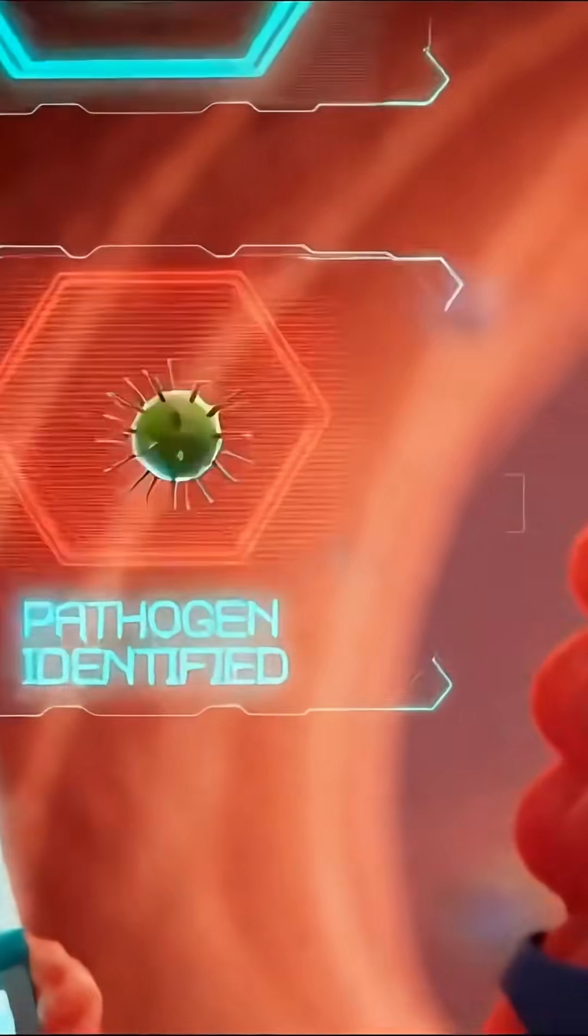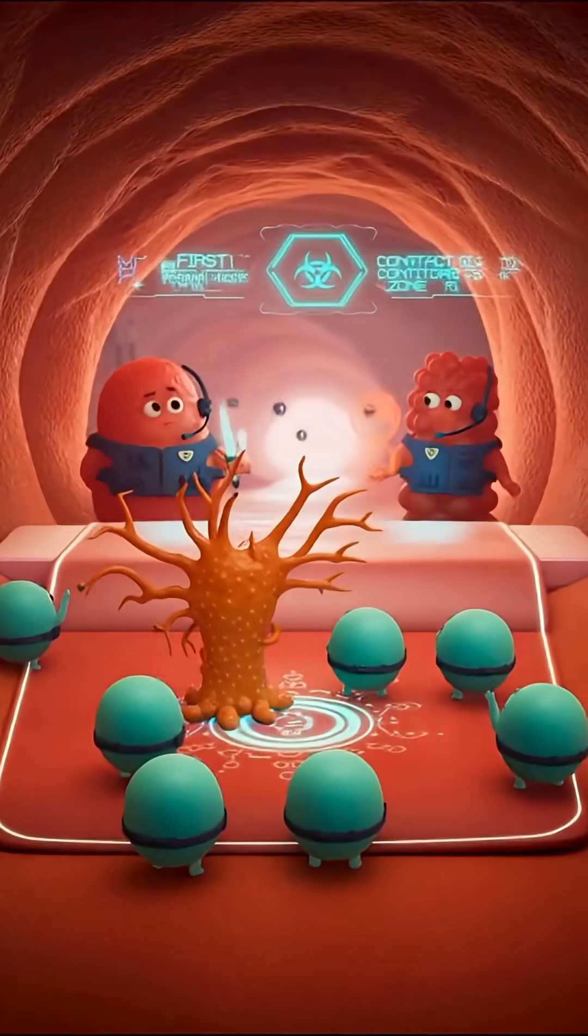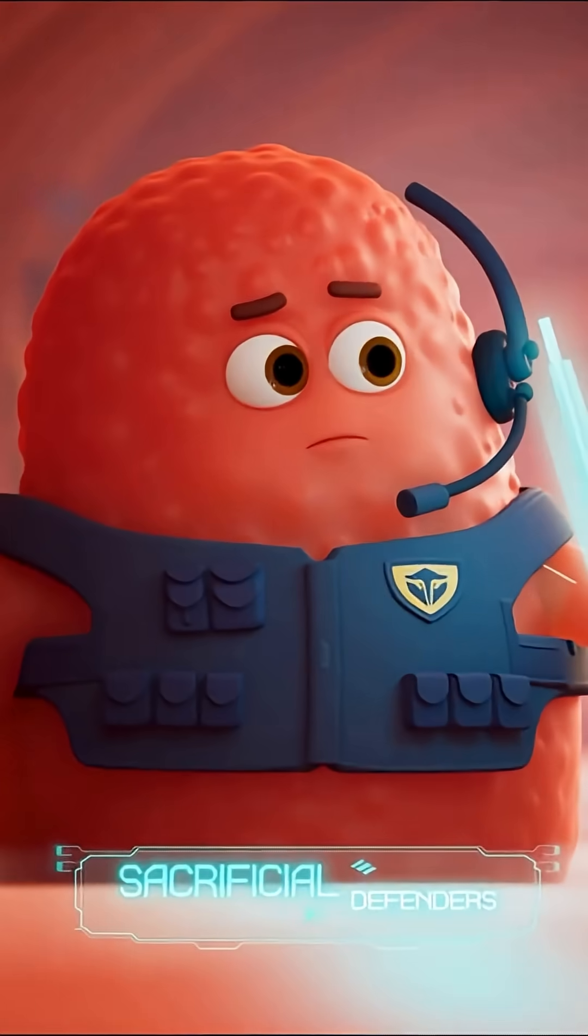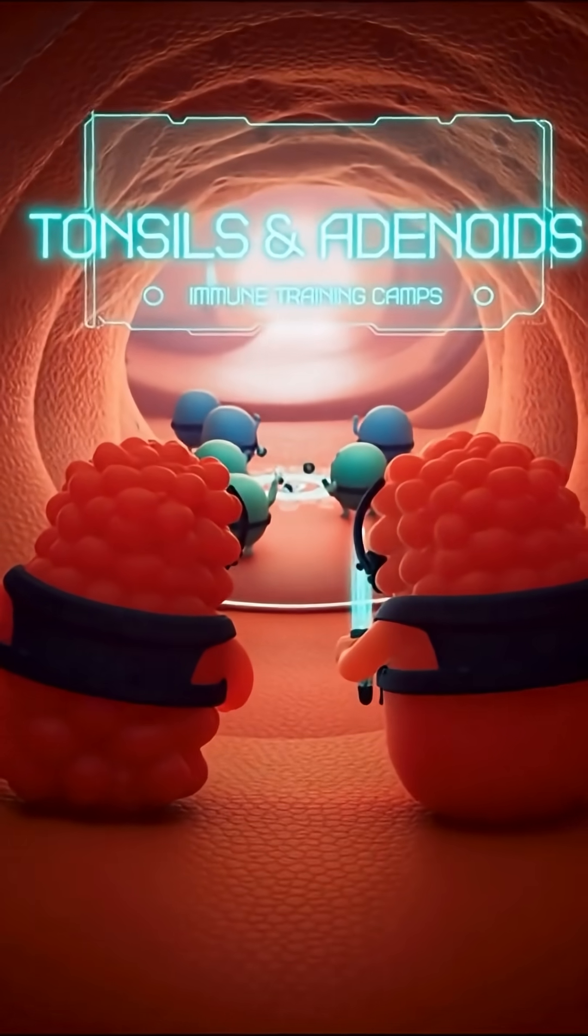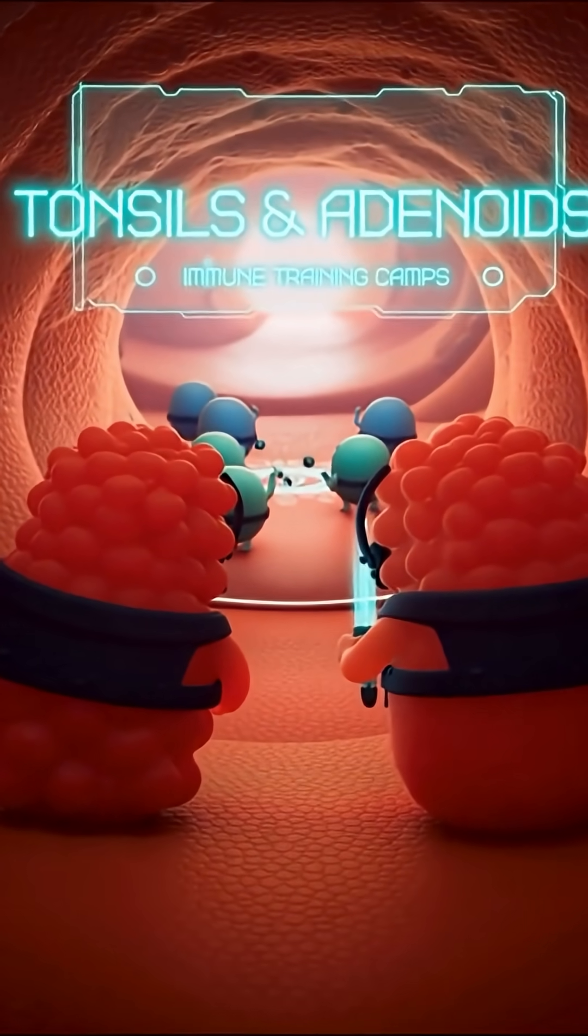Immune checkpoint. Pathogen identified. Custom weapons. First contact zone. Tonsils and adenoids are immune training camps, sampling inhaled germs and teaching your body to recognize threats. Sacrificial defenders at the gateway of your throat.